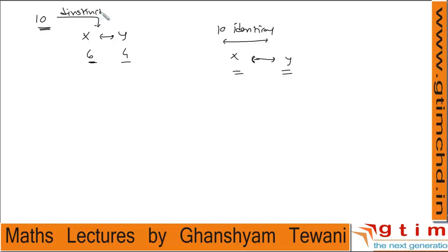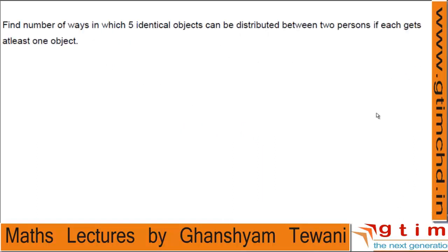Keeping this point in mind, let's understand some illustrations for distribution of identical objects. Consider this situation: find the number of ways in which five identical objects can be distributed between two persons if each gets at least one object.